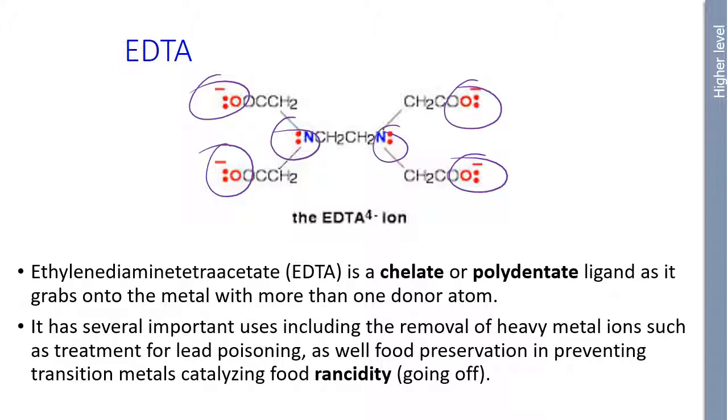It has several important uses, including the removal of heavy metal ions. So if you get lead poisoning, for example, in the blood, they might try EDTA, probably kill you, but there you go. Probably soil as well. They could try and bind up the heavy metal in the soil. And also it's used to prevent transition metals catalyzing food rancidity going off. Because a lot of these transition metals are used by bacteria to, like, proteases to break down food. So by binding those transition metals, those reactions can't occur.